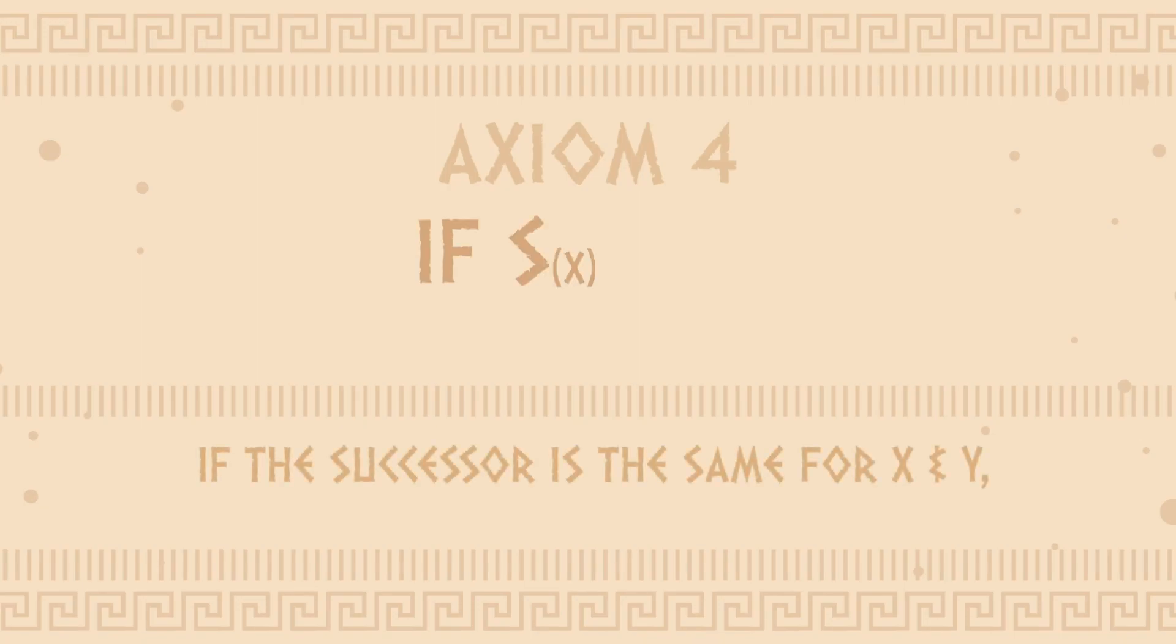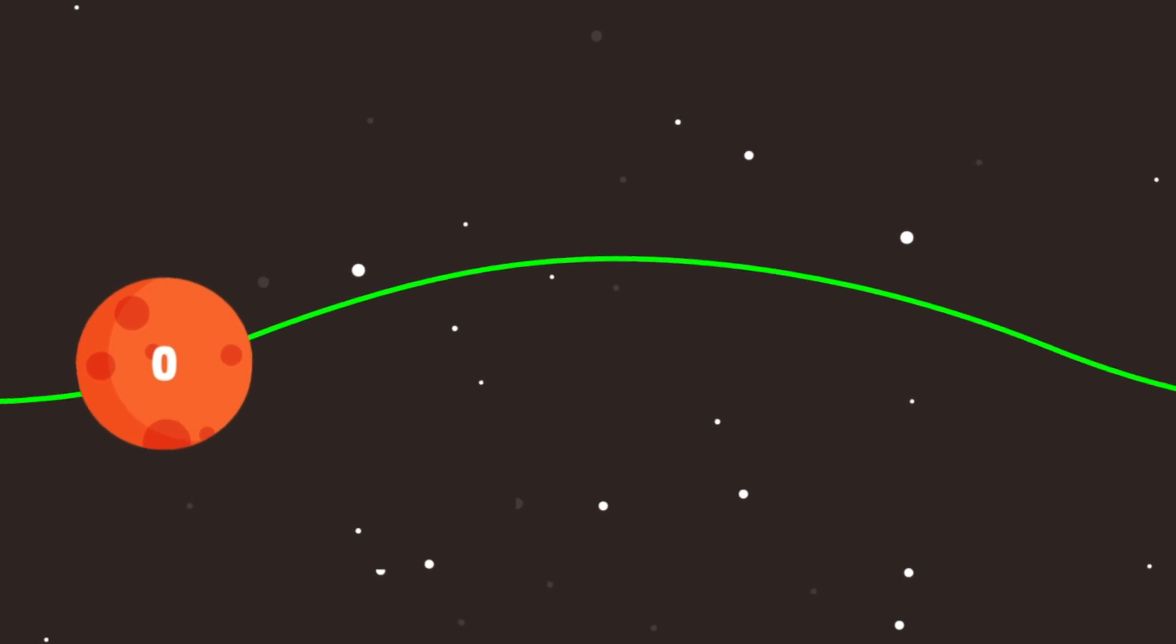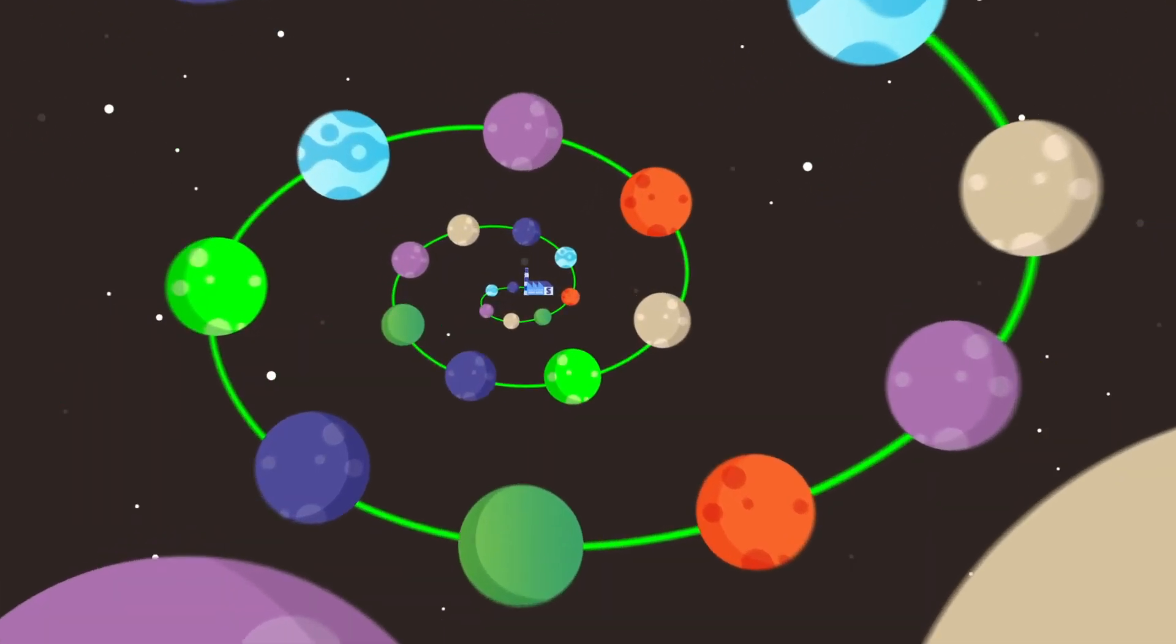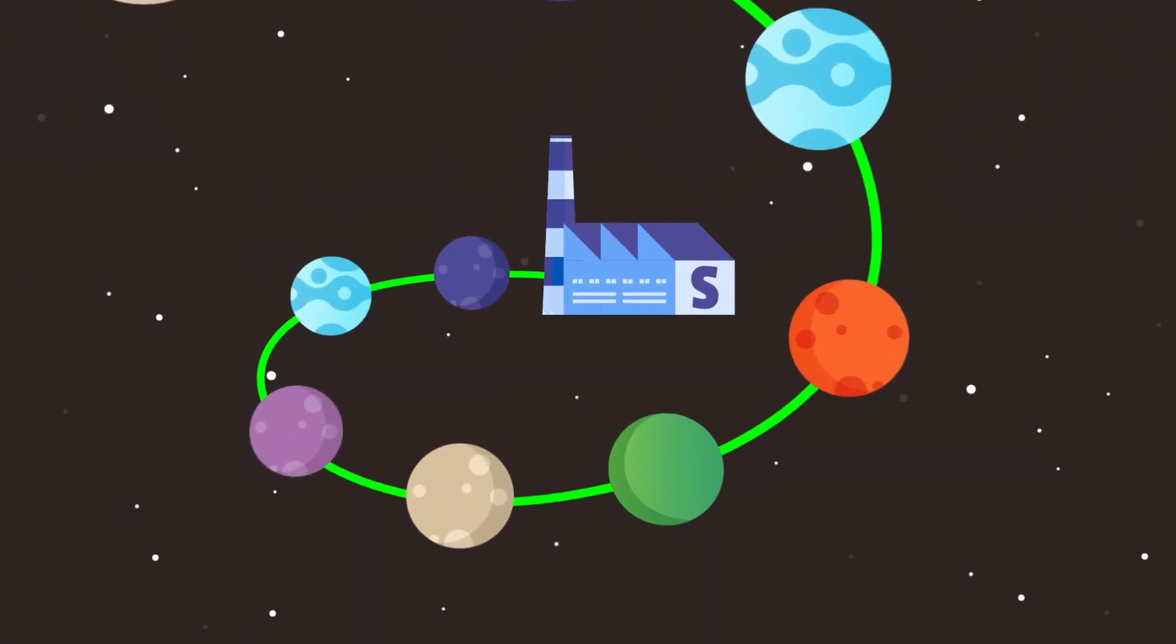So there had to be a fourth Peano axiom. If s of x equals s of y, then x equals y. 0 is a number. s of 0 is a new number. Thanks to axiom 4, we can make an infinite chain of numbers by repeatedly applying s.